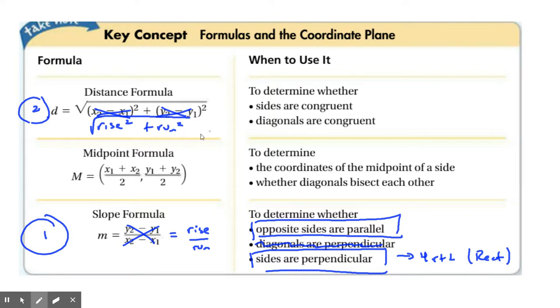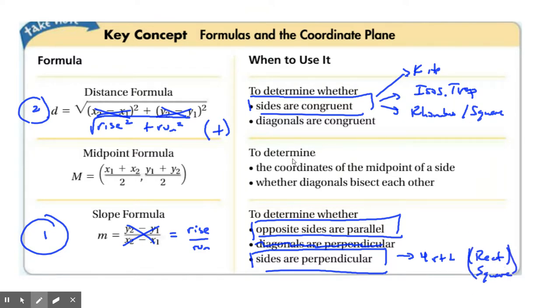Remember, we're going to ignore the negatives, so everything is positive. We're going to use this to show if we have congruent sides. This would be most helpful for our kite, our isosceles trapezoid, and for our rhombus slash square. I should put down here square as well for the four right angles. Remember, you're only a square if you're both a rhombus and a rectangle.